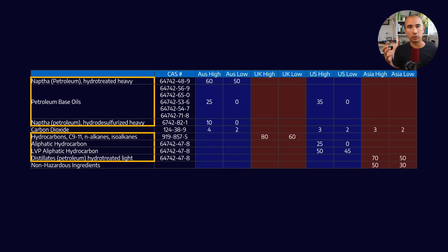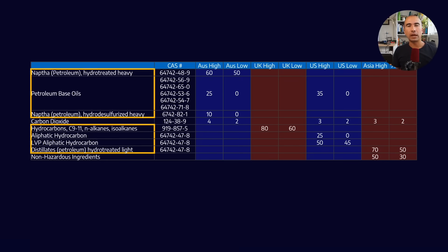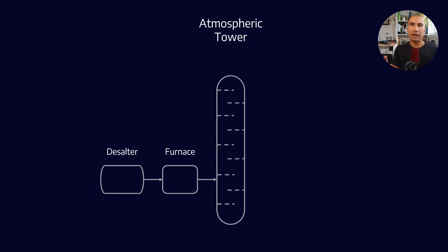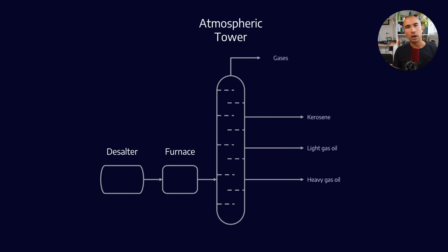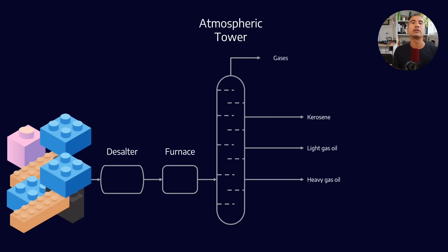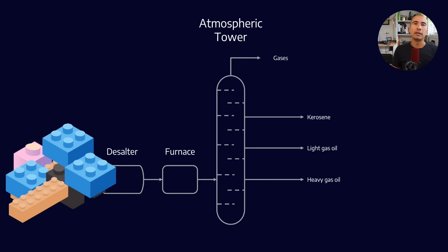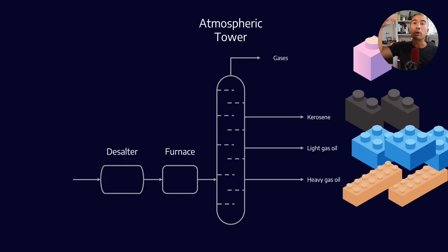The bulk of the product is made of petroleum base oils as well as hydro-treated petroleum naphtha. And if you remember, when we have crude oil, one of the first steps it goes through is an atmospheric tower. Crude oil — which I've likened to a box of Lego, where we have all kinds of different shapes and sizes — is processed through the atmospheric tower, which is able to distill different molecular fractions.